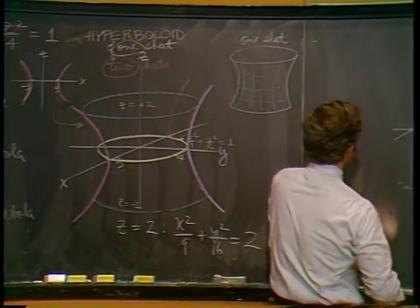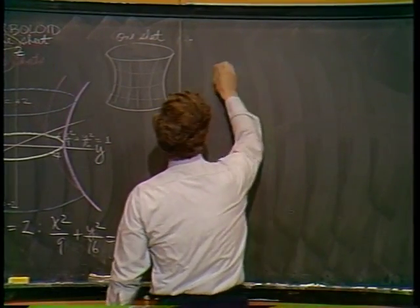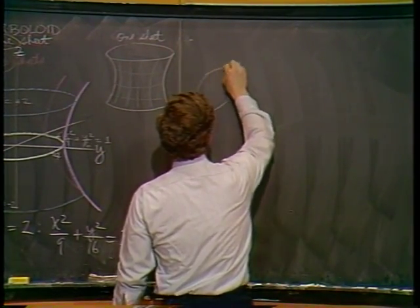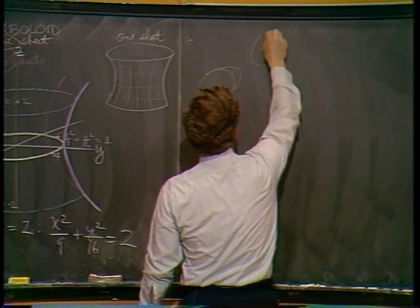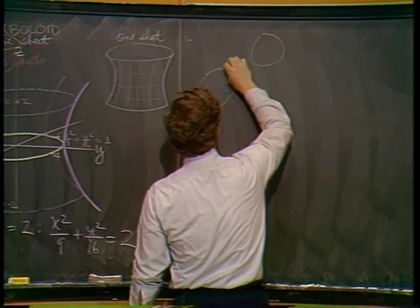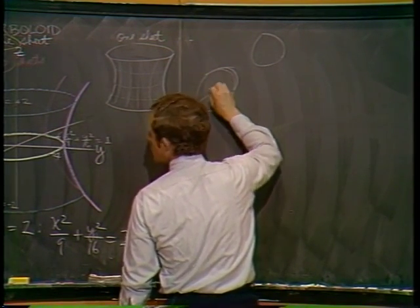The two-sheeted hyperboloid kind of has a bullet shape pointing at another bullet shape back here. It's kind of hard because I'm looking at the thing from the back. But here comes, in this case, the x-axis - it pierces through this, hits this bullet shape, and again pierces through it back there.